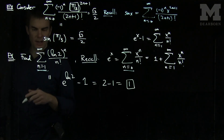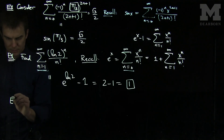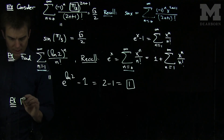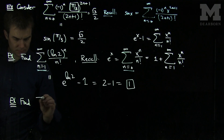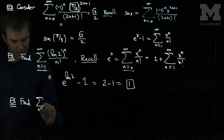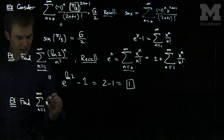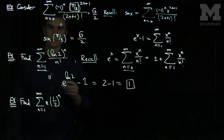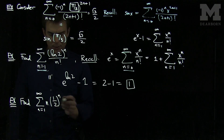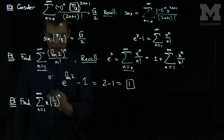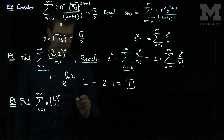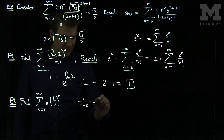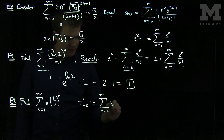Let's look at one final example. Let's find the sum, n goes from 1 to infinity of n times 1 half to the power of n. What we can do is note that if there was no n here, we'd be close to a geometric series. So let's note that 1 over 1 minus x is the sum n goes from 0 to infinity of x to the n.